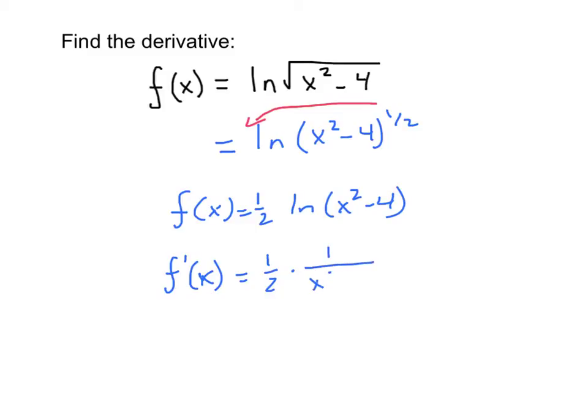Which is 1 over x squared minus 4 times the derivative of x squared minus 4 because of the chain rule. And the derivative of that is 2x. So we have these three pieces: the constant multiple, the 1 over the function x squared minus 4, and the derivative of x squared minus 4 itself.